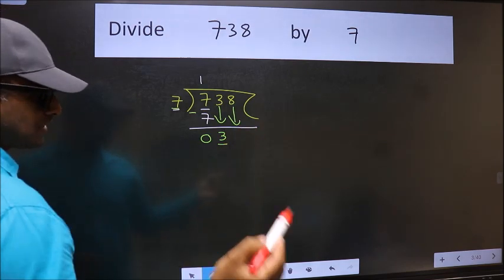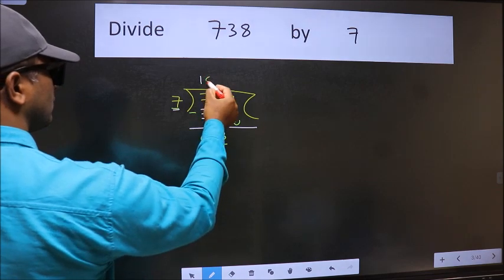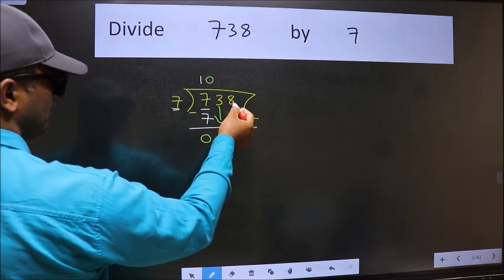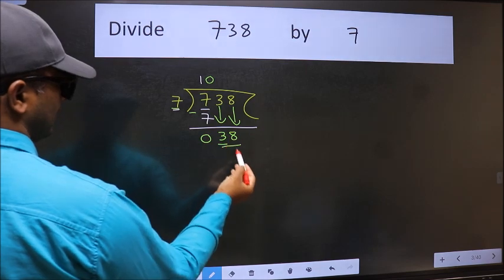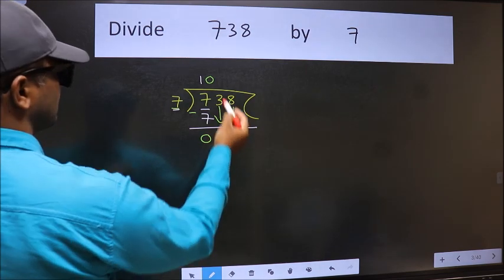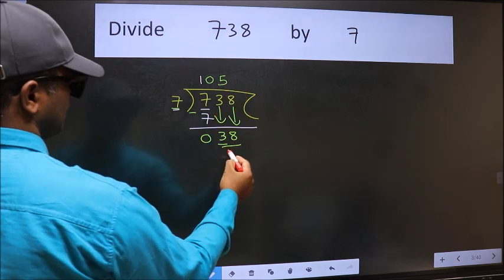And the rule to bring down the second number is we should put 0 here. Then only we can bring this number down. Now 38. A number close to 38 in the 7 table is 7 times 5 equals 35.